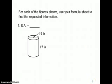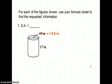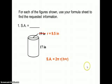The first question asks us to find the surface area of a cylinder. We're going to need the radius for a cylinder, and we're given the diameter, so let's start with cutting that in half for the radius. Write our formula down: 2πr(h + r).